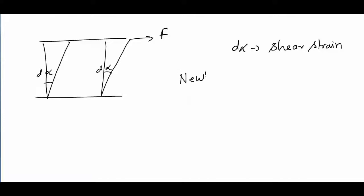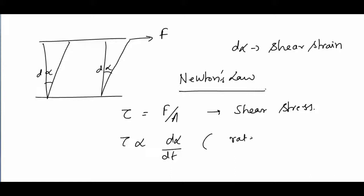So on the basis of experiments, Newton gave a law for viscosity. He said that the shear stress, that is force per unit area, which is nothing but shear stress tau, is proportional to rate of shear strain, D alpha by Dt. It is important to know that it is variation with respect to rate of shear strain.